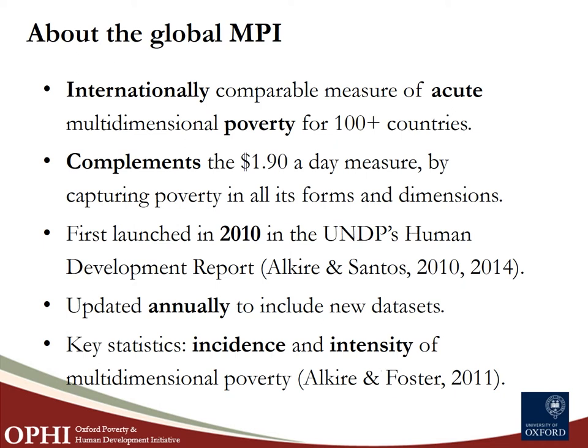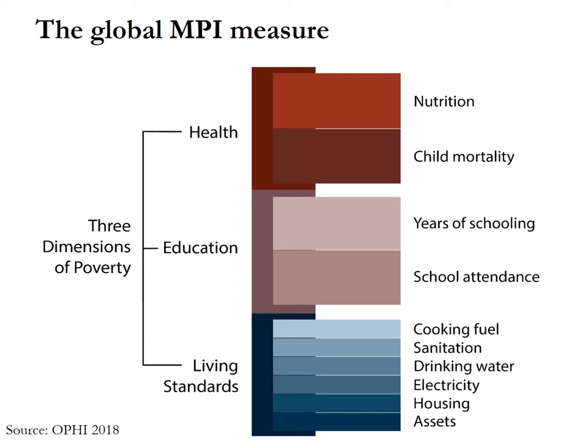Now you will wonder: what are these deprivations, what is a deprivation profile, what is average deprivation? Allow me to introduce the Global MPI structure. The Global MPI directly measures the deprivation that people face simultaneously in different aspects of their life, emphasizing three key dimensions: health, education, and living standards — the same dimensions used in the UNDP's Human Development Index.